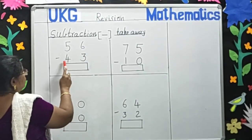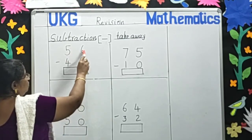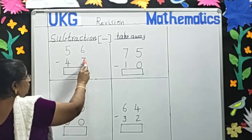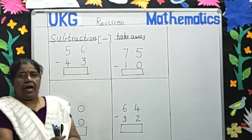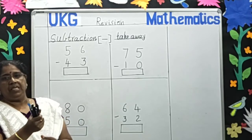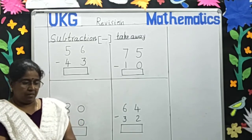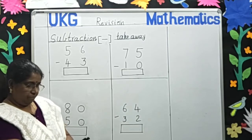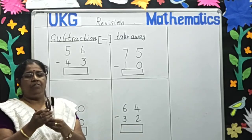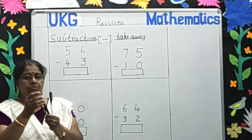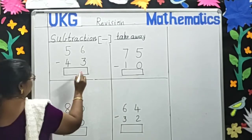5656 minus 4343. First we will subtract these two numbers. First one is 6, below is 3. I have 6 pens in my hand. 3 pens I gave to my friend. Now how many pens I have children? 1, 2, 3. So 6 minus 3 is 3.